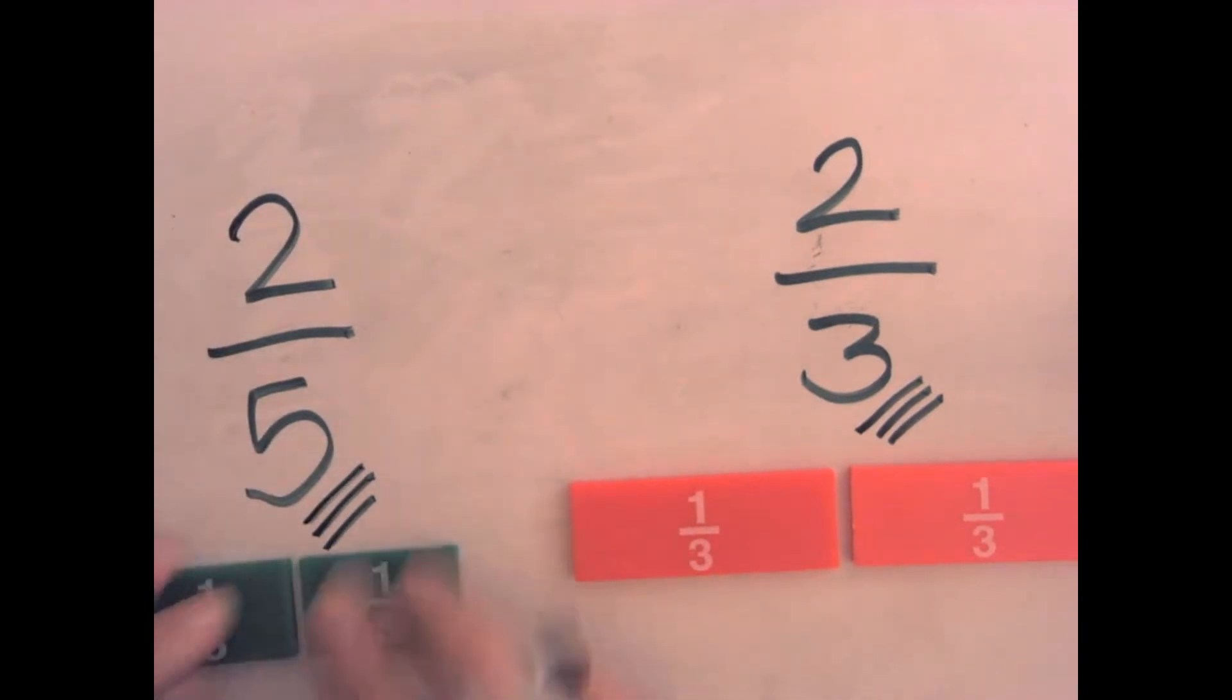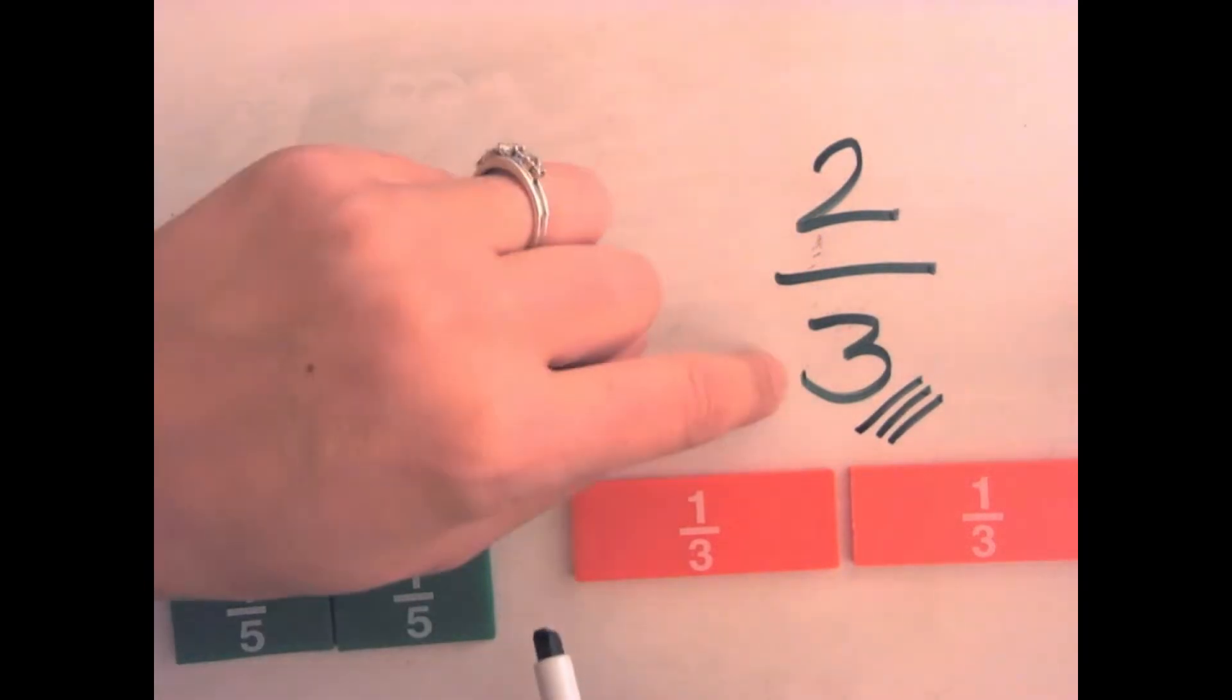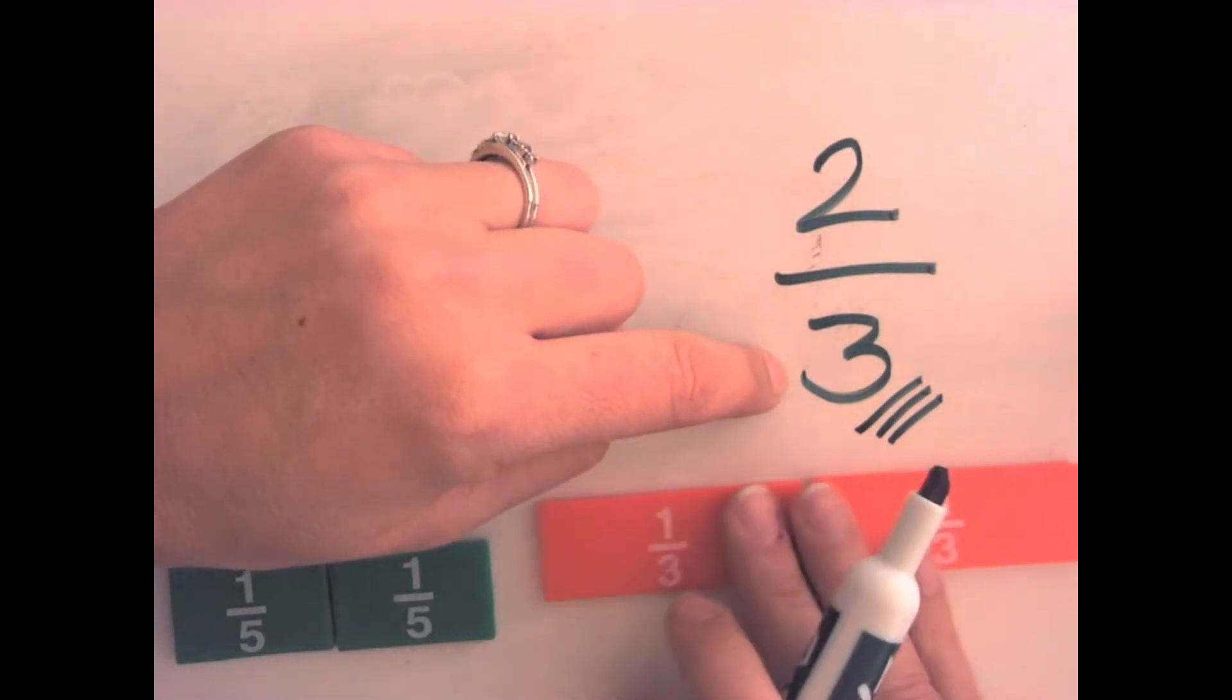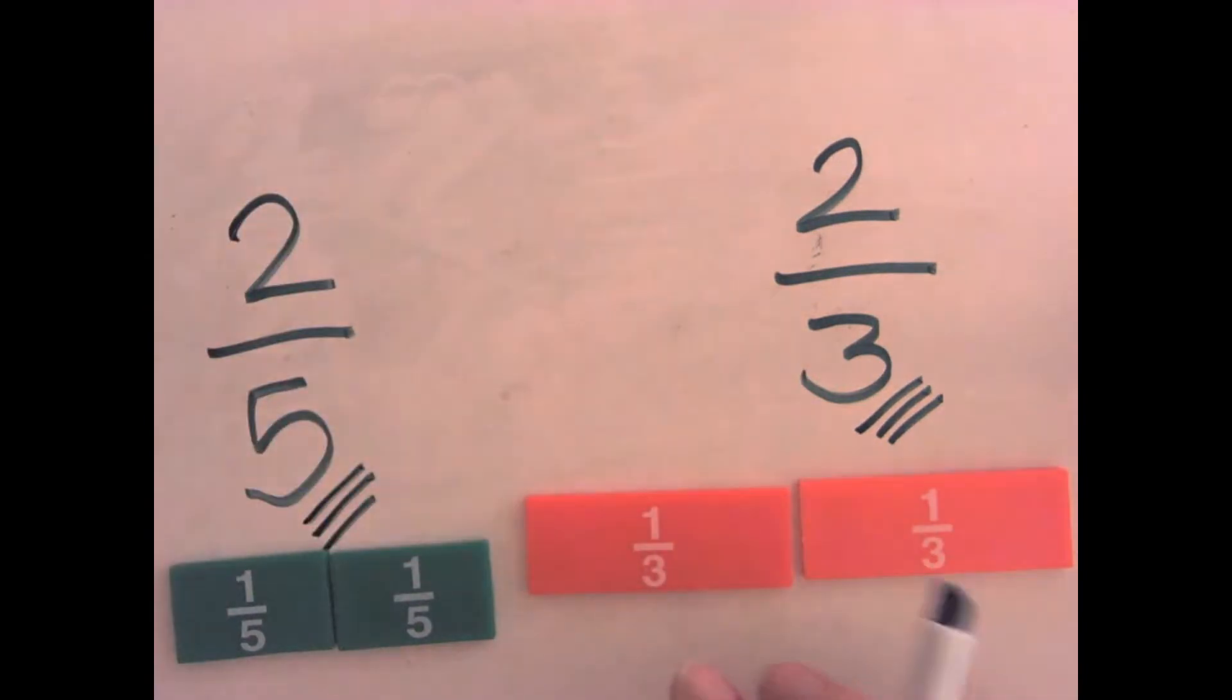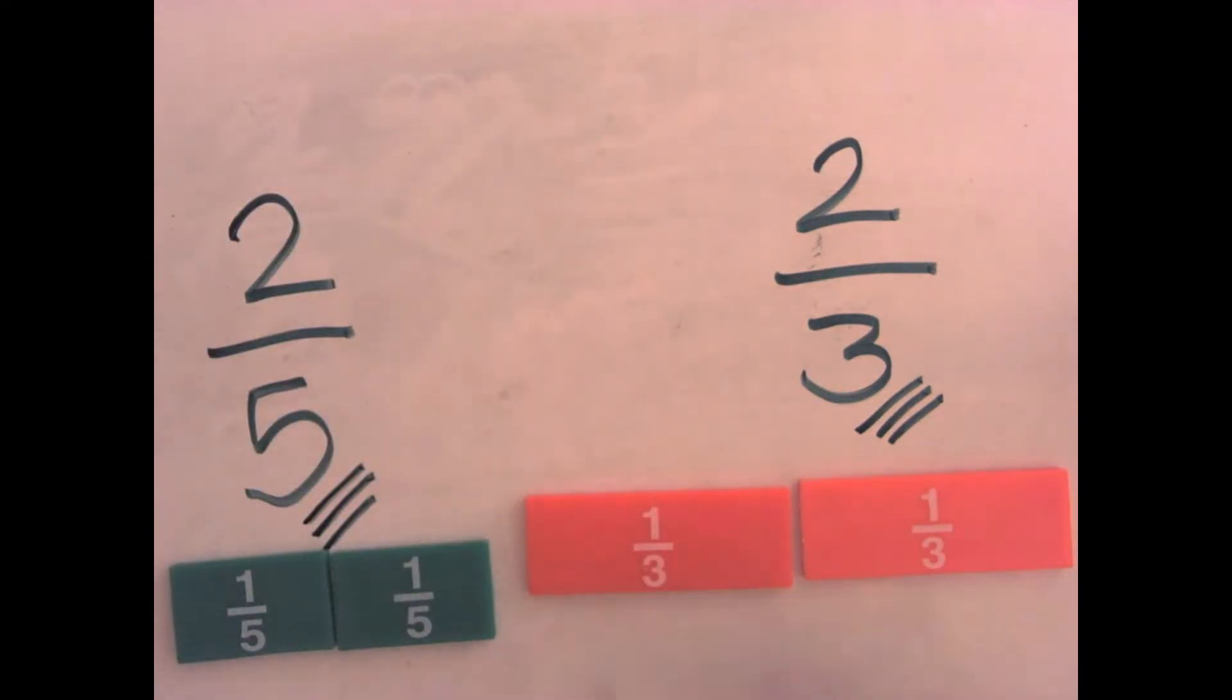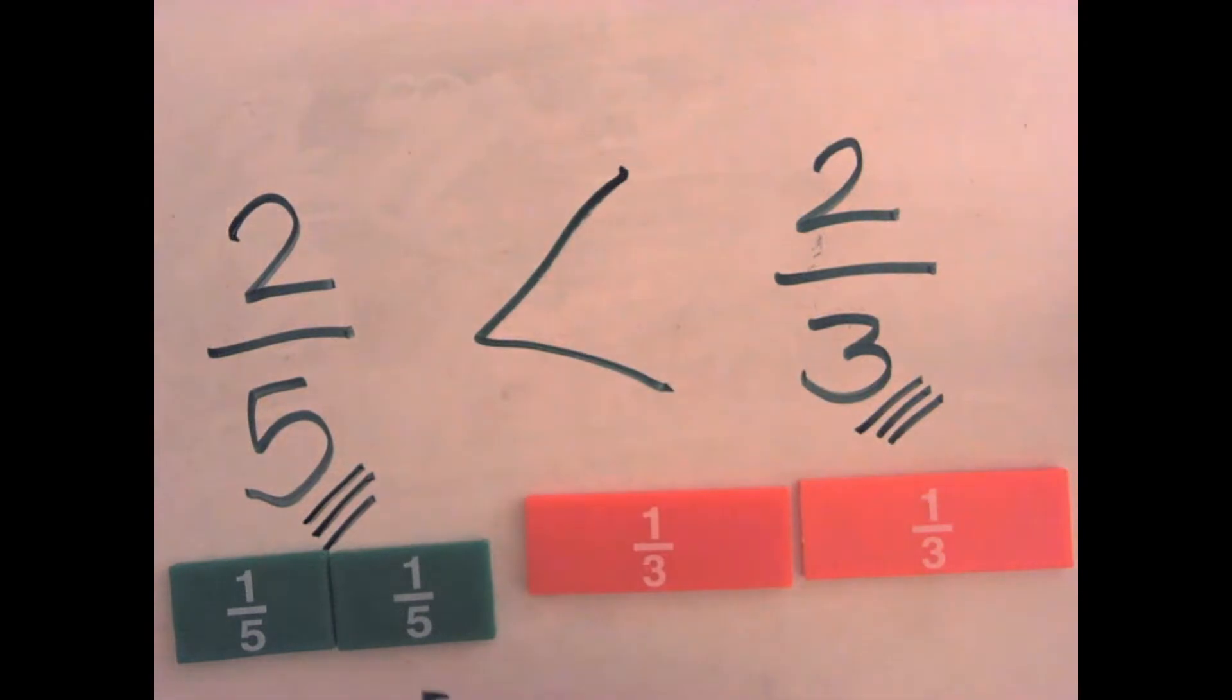And so then here we have fifths, and these cuts are going to be smaller. The pieces are going to be smaller because we're cutting them into more pieces as we need more cake. That's how we think about fractions in our classroom. So I have two-fifths, and I know that fifths are smaller because I have to cut it more. Or I have two-thirds, and I know that the thirds are bigger because I have less cuts to make. So that shows me that two-thirds is going to be bigger.